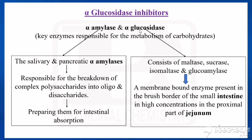Now, come to alpha-glucosidase. This one consists of four enzymes: maltase, sucrase, isomaltase, and glucoamylase.